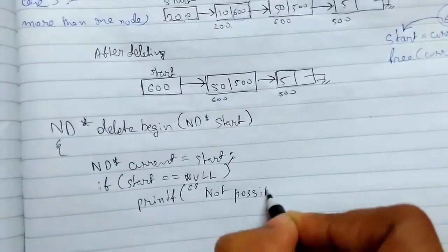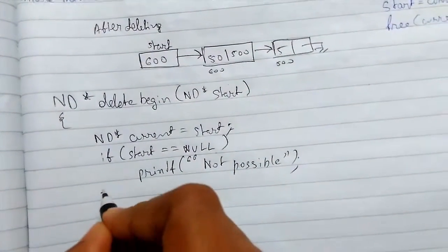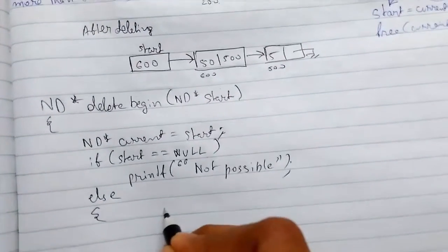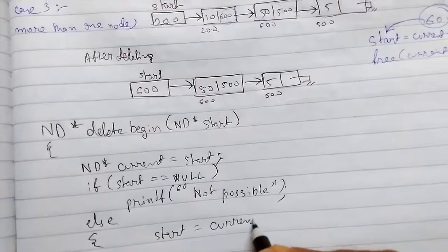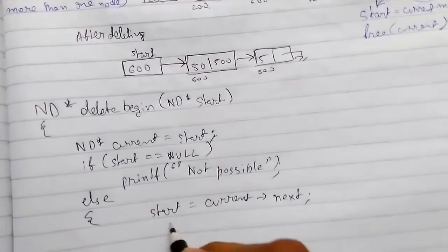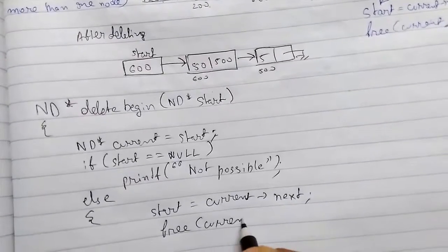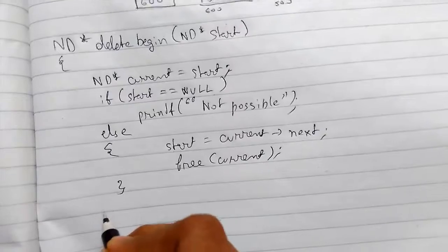So not possible and for other case when the elements are present, we can change start equals to current arrow next and we will just free the current within the if part and it will be executed and just return the start.